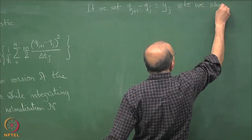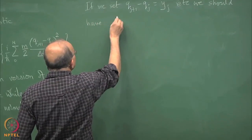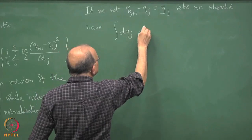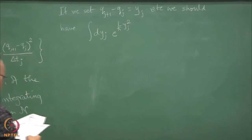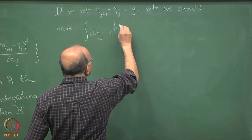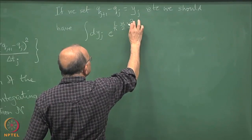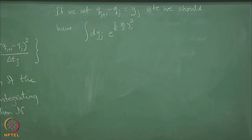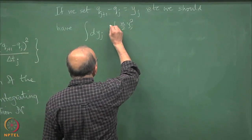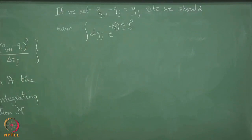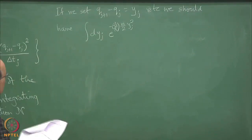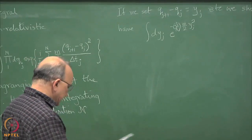We should have this kind of integral: y_j squared times half-m. That is a bit like the Gaussian integral if, between friends, we imagine that i is actually a minus sign — so we say that is a minus sign times minus-i — and we treat the minus-i as some constant and just do a Gaussian integral.